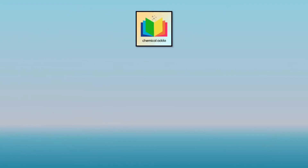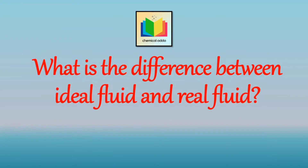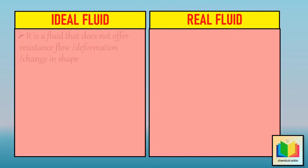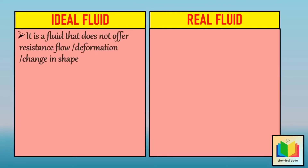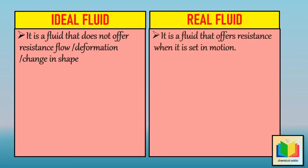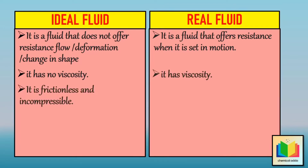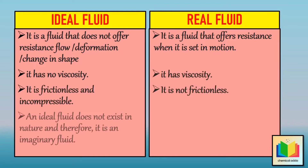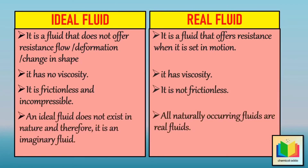What is the difference between ideal fluid and real fluid? Ideal fluid is a fluid that does not offer resistance to flow, deformation, or change in shape. But real fluid offers resistance when it is set in motion. Ideal fluid has no viscosity, but real fluid has viscosity. The ideal fluid is frictionless and incompressible, but the real fluid is not frictionless. An ideal fluid does not exist in nature and therefore it is an imaginary fluid, whereas all naturally occurring fluids are real fluids.